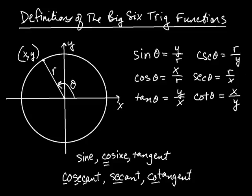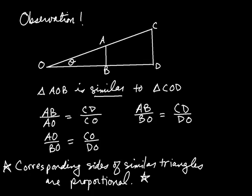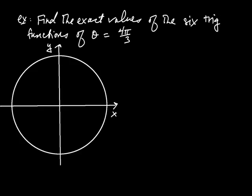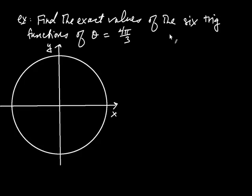Let's use our definitions to find the exact values of the six trig functions of the angle theta = 4π/3. You start by drawing any size circle and locating your angle. Locating this angle is a bit of an art — we're going to think about how it relates to integer multiples of pi, like negative pi, 0, pi, 2π, 3π, and so on.